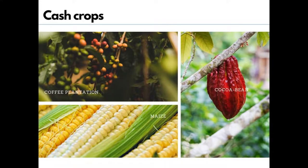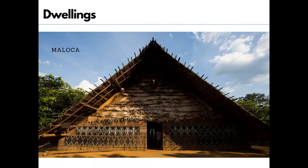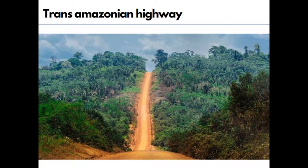Apart from root vegetables, they also grow cash crops like coffee, cocoa, and maize. As the rainforests provide lots of wood, they make thatch houses shaped like beehives. There are also large apartment-like houses called maloka, which have a steep slant structure. The life of people in the Amazon basin is slowly changing. The Trans-Amazon Highway, built in 1970, made almost all parts of the forest accessible. Aircraft and helicopters are also used to reach various destinations in the forest.